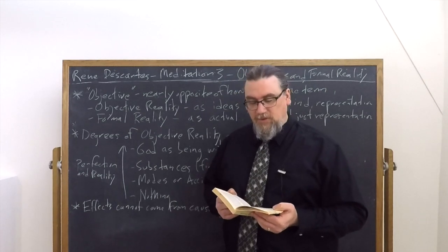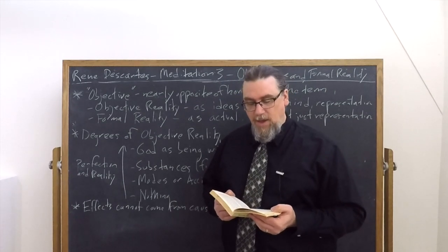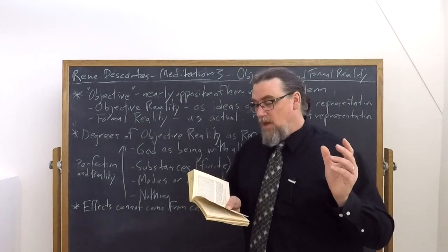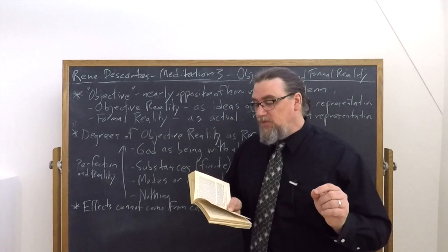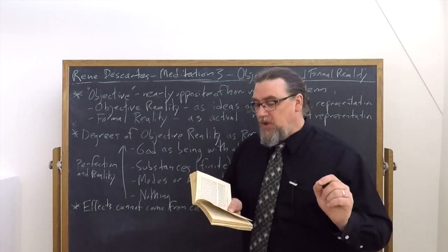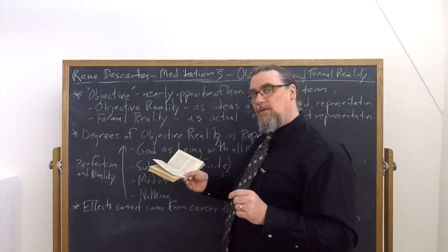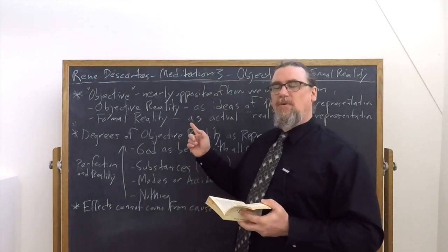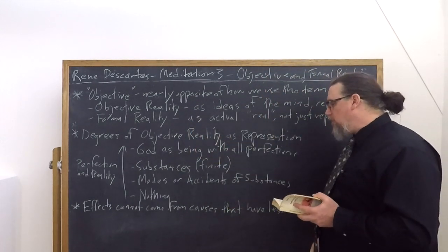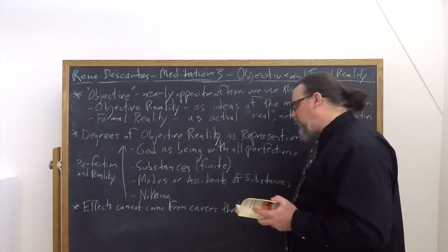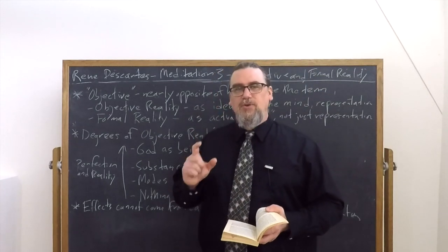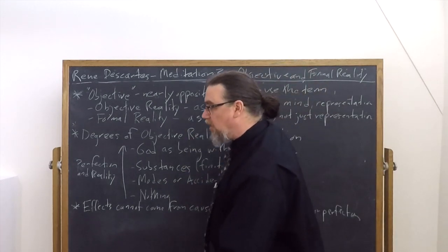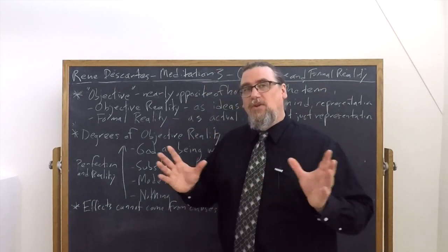Descartes goes on further and he says that this doesn't just apply to what we can talk about as one thing that possesses in itself formally or eminently whatever is in the composition of the thing that it's producing. He is the example of a stone, but he says that this applies just as much to our ideas. So that this applies just as much to objective reality. Effects cannot come from causes that would have less reality or perfection, objectively speaking, than they would in any other case.